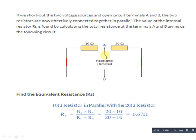10 ohm and 20 ohm are both connected in parallel, so the equivalent resistance is (20 × 10) / (20 + 10). The formula for parallel connection is R1×R2 / (R1+R2), where R1 = 10 ohm and R2 = 20 ohm. So the equivalent RN equals 6.67 ohm.